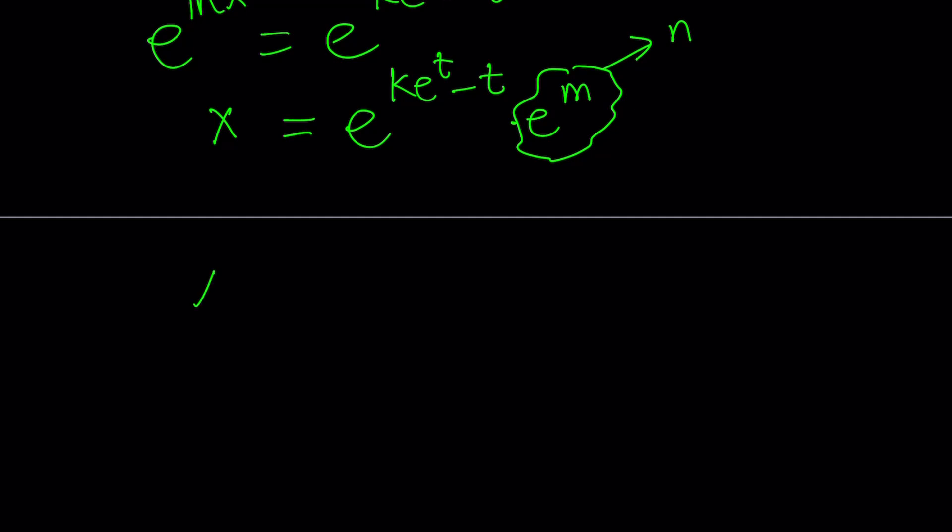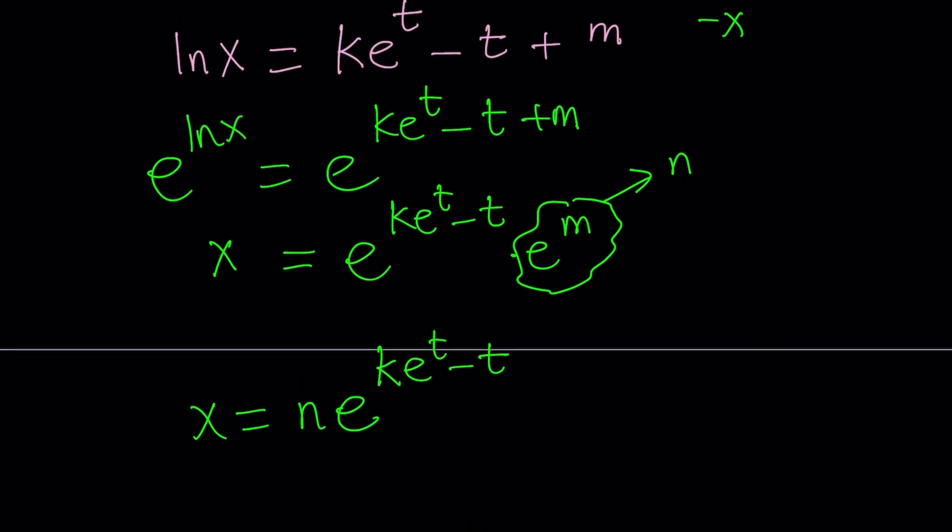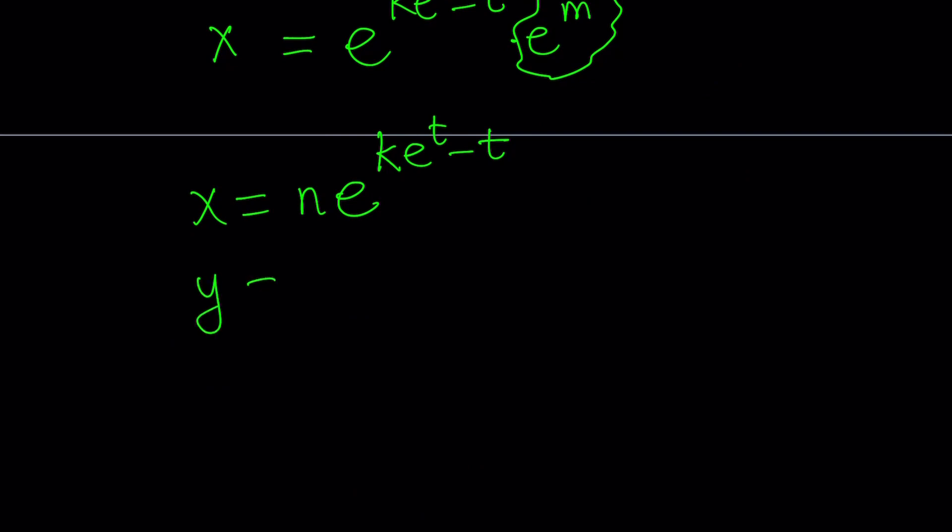So from here, we get the following x equals n times e to the power k e to the power t minus t. So it's kind of like a weird exponential where the exponent is an exponential minus a linear. And then we have the value of x from here, basically, right? Let's go ahead and take a look at the y. We found y equals k e to the power t minus 1.